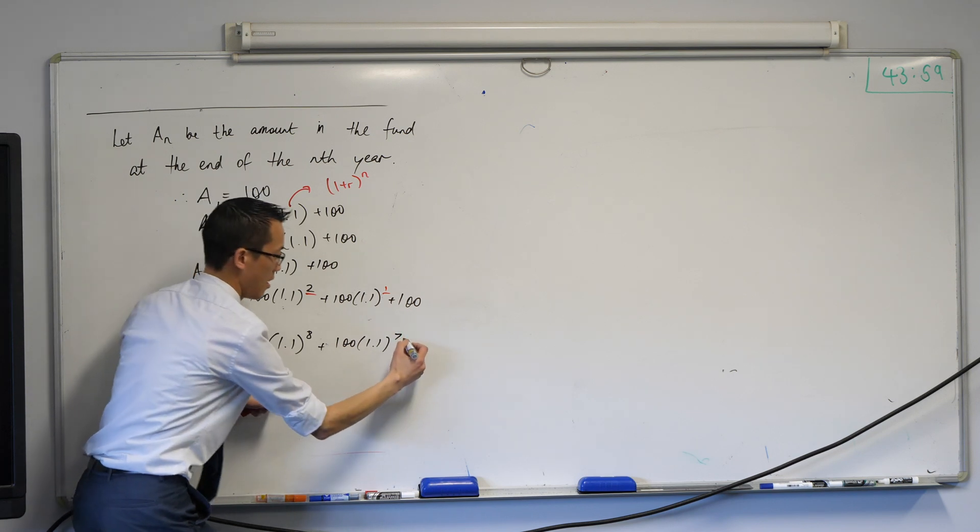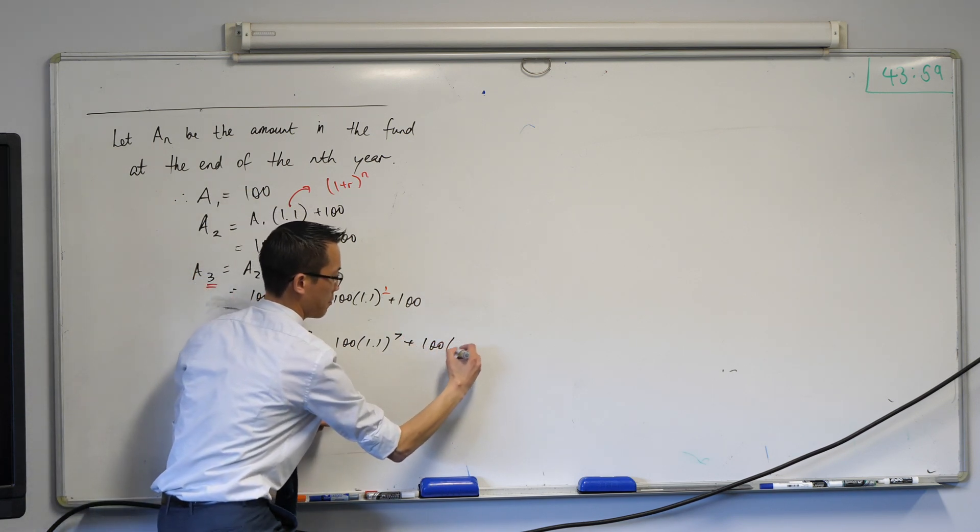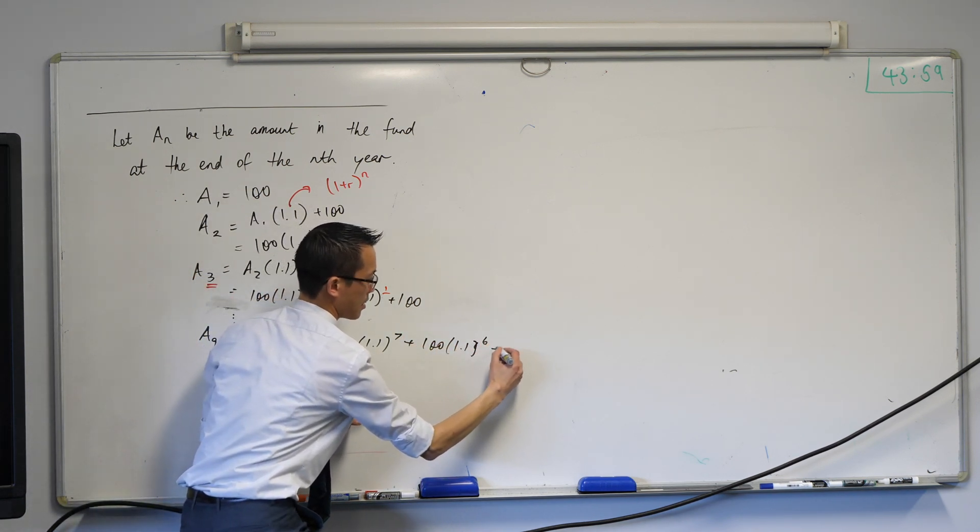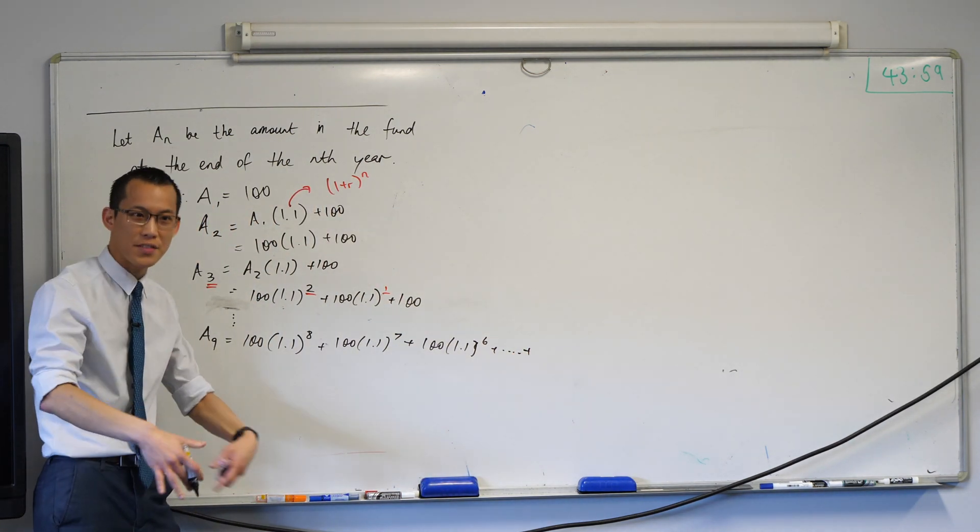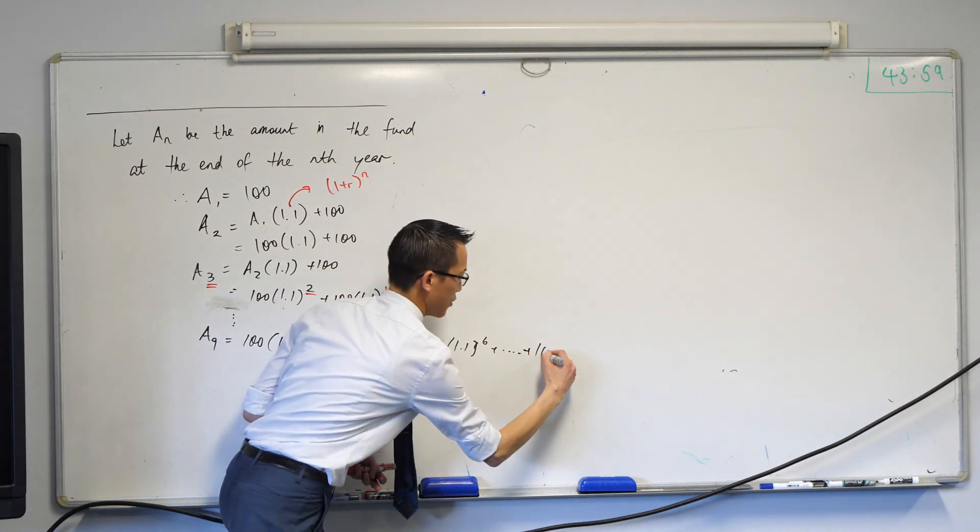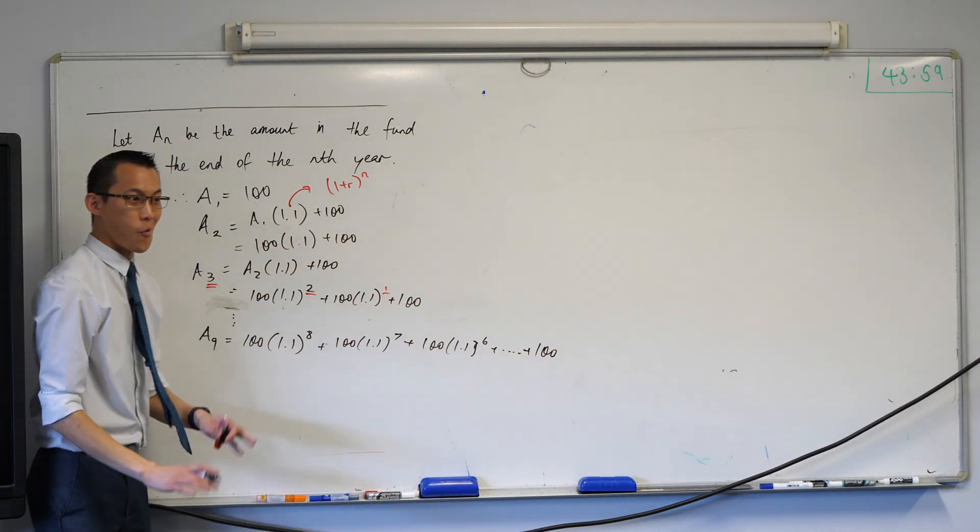Right, so that'll be a 7. I need one more, it's going to be a 6. And then, what will the very last turn be? 100. It'll be 100, because at the end of each year, that's what happens every single time. Okay, wonderful.